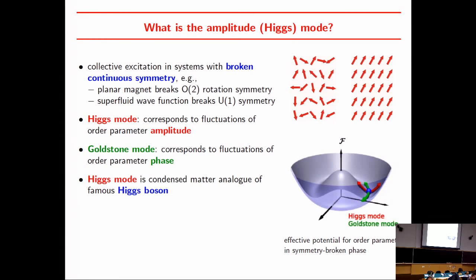The amplitude mode is one of the collective excitations you get if a system has a continuous symmetry that is spontaneously broken. In this cartoon picture, we have XY spins that can rotate in the plane. There is a disordered phase in which they point in random directions, and an ordered phase in which they align. The Mexican hat picture illustrates that we can have one excitation corresponding to changing the magnitude of the order parameter — this is the red excitation.